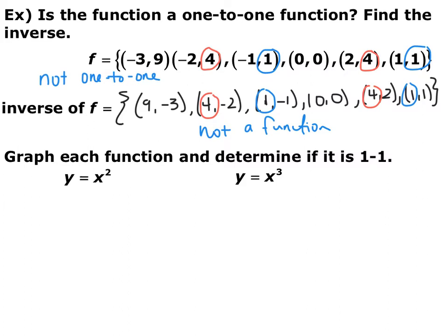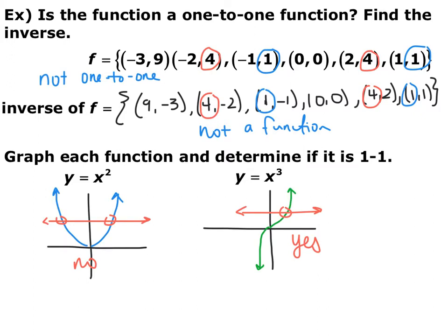Sketch a graph of y = x² and y = x³ and decide whether they're one-to-one, and whether their inverses would be functions. The parabola y = x² does not pass the horizontal line test, so it has repeated y's and is not one-to-one. Versus y = x³, which does not have any repeated y's, so it is one-to-one.